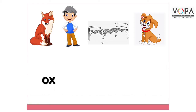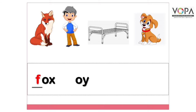जैसे देखो बच्चों, fox के नीचे यहाँ पर आपको सिर्फ 'ox' दिया गया है और उसके आगे खाली जगह दी गई है, आपको ये blank fill करना है। तो बच्चों, हमें पता है fox — इस word की शुरुआत होती है 'f' से, तो बनेगा fox। इसी तरह boy — यहाँ पर 'oy' दिया गया है और उसके आगे खाली जगह दी गई है। हमें पता है कि boy इस word की शुरुआत होती है 'b' से।